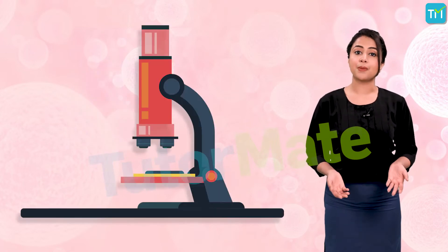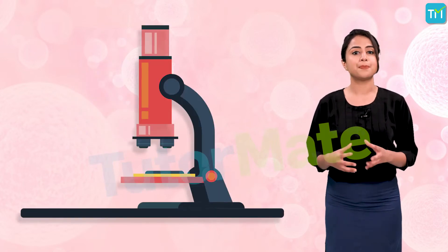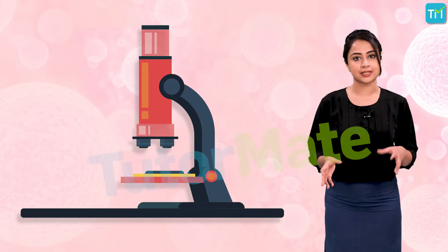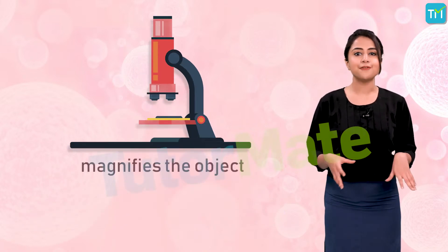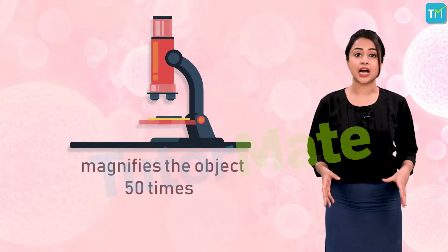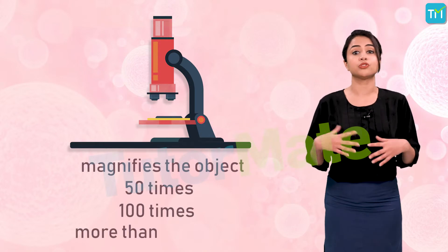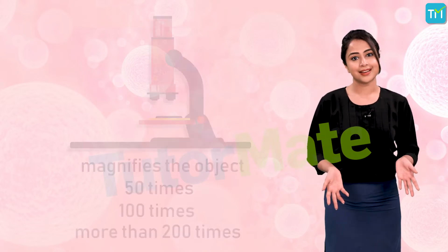Later came the compound microscope, which uses a pair of lenses and magnifies the object 50 times, 100 times, or even more than 200 times in some cases.